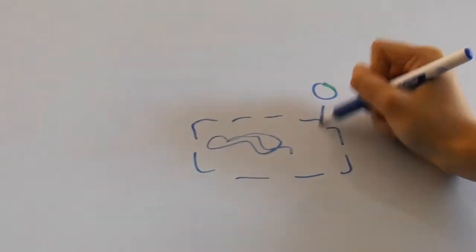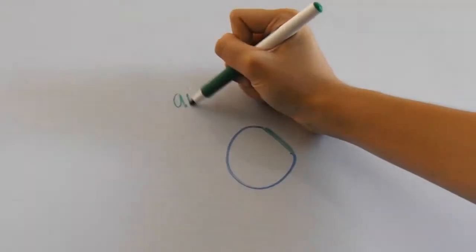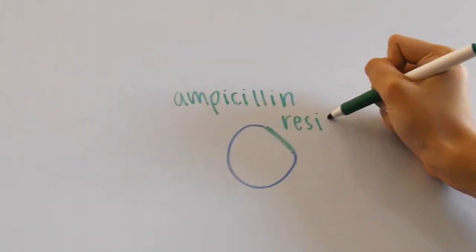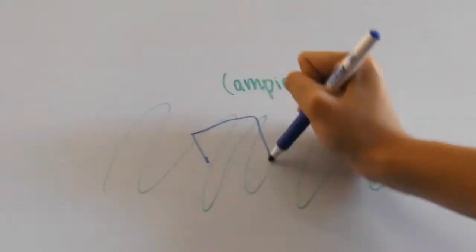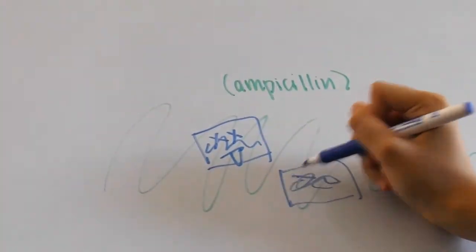The plasmid here contains a gene for ampicillin resistance, which is the resistance gene that I was talking about earlier. It codes for the bacteria to be able to not die from ampicillin, a type of drug.